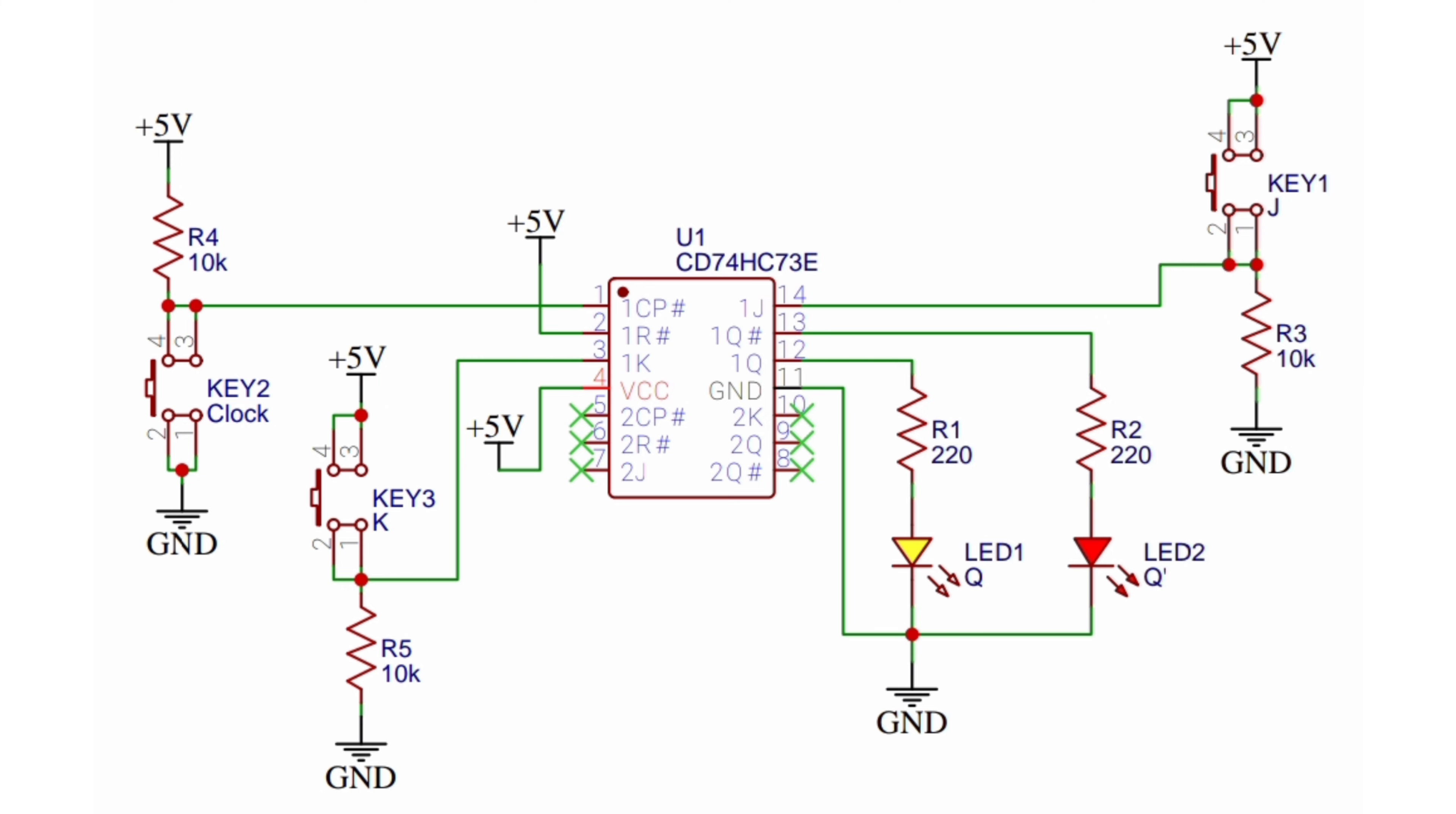But we are using only the first flip-flop. A push switch with a 10 kilo-ohm pulldown resistor is connected to the J input of the first JK flip-flop.